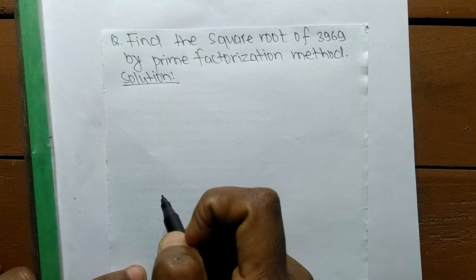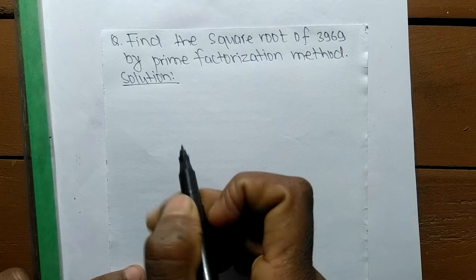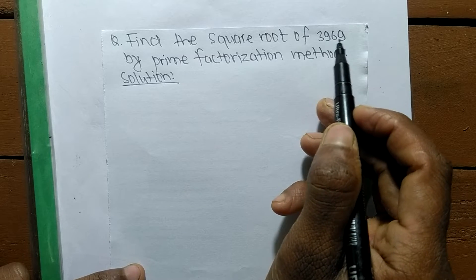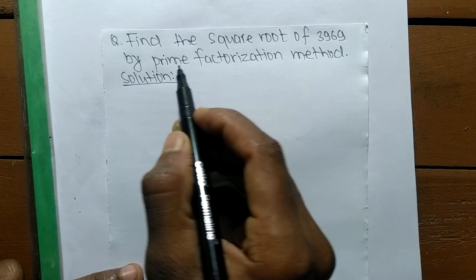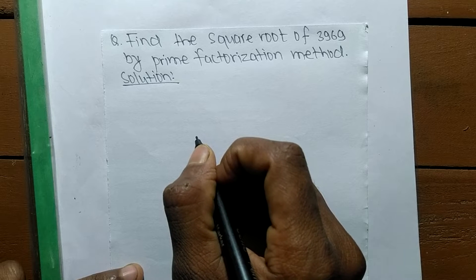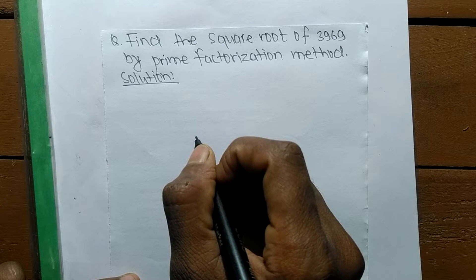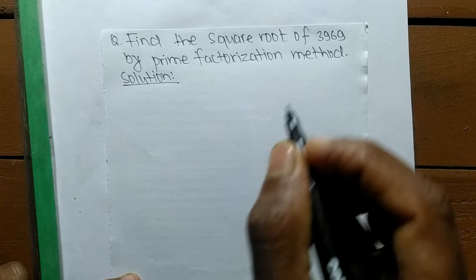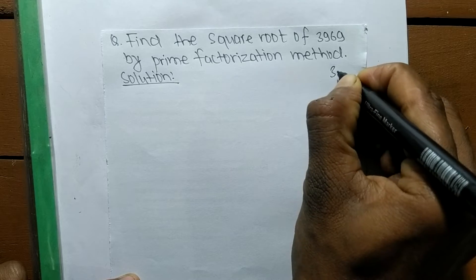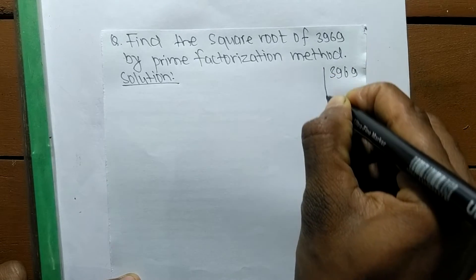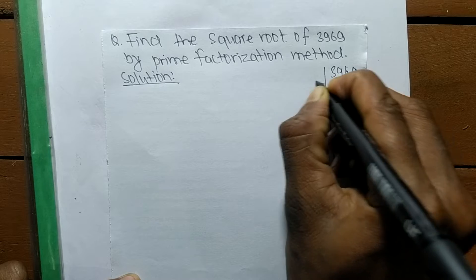Today in this video we shall learn to find the square root of 3969 by the prime factorization method. To find the square root by prime factorization, first we have to find out the prime factors of the given number, which is 3969.